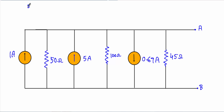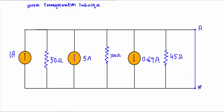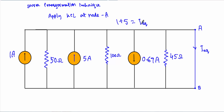Now I will calculate I_equivalent — the effective current that will be flowing through this AB path. To do that, I will connect the A and B terminal with a short circuit; the effective current flowing through this path will be our I_equivalent. Applying KCL at node A: 1 ampere incoming plus 5 ampere incoming equals I_equivalent plus 0.67 ampere outgoing, from which I_equivalent equals 5.33 ampere.